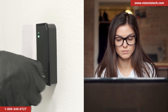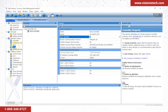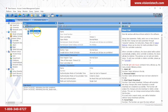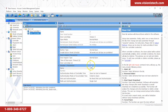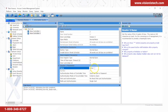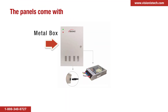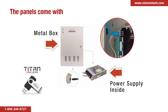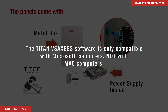You can restrict certain users for certain doors and open doors from the Titan VS Access desktop software. It also supports 26 to 34 bits Wiegand interface for accessing card readers and is seamlessly compatible with third-party card readers. The panels come with a metal box, a wired network LAN connection, a 12V 8.5 amp power supply, and a Titan VS Access software USB. The Titan VS Access software is only compatible with Microsoft computers, not with Mac computers.